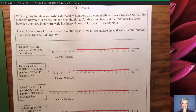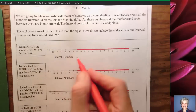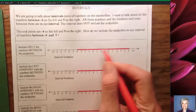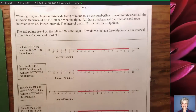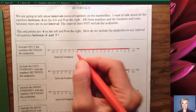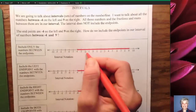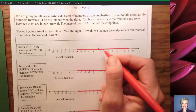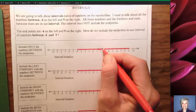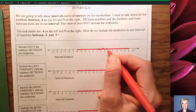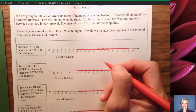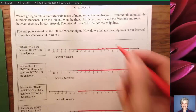I want to talk about all of the numbers between negative 4 on the left and 9 on the right. Notice that I've colored them all in red. All those numbers and the fractions and roots in between them — we're not just talking about the big numbers, we're talking about the little numbers in between. We call the big numbers integers, and then there are lots of fractions, decimals, and roots going on between them. In fact, there are an infinite number, which is a whole bunch. So we're talking about all of them.